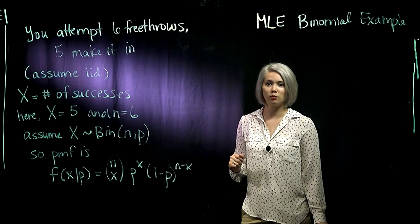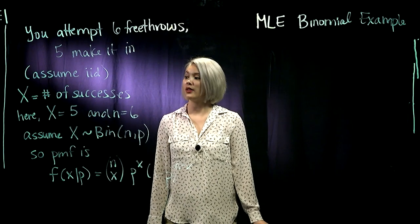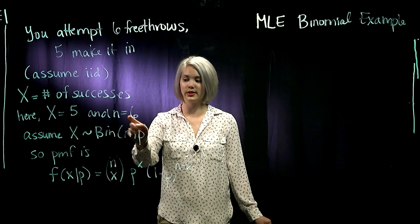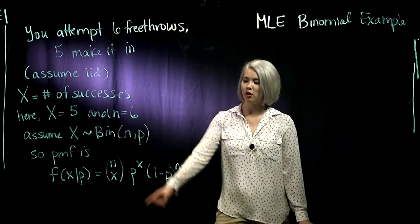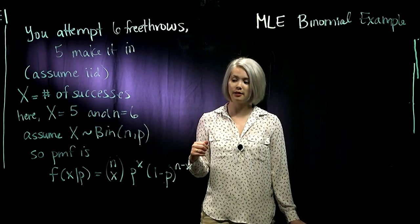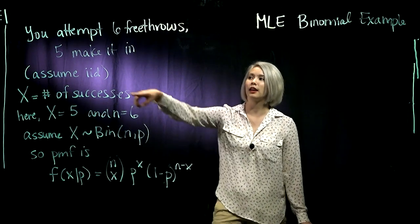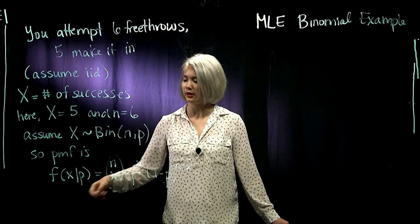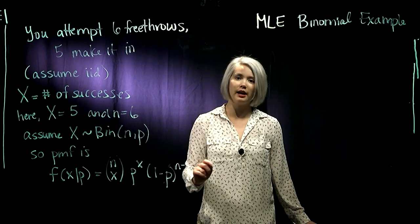So if we define a random variable X as the number of successes, the number of shots that make it in, then in our case we have X equals five and we have six attempts, so n equals six. In other words, our random variable X has this binomial distribution with n equals six and p unknown, so p is the probability of the shot making it in the basket. P is unknown, this is what we're looking for based on the fact that you have six shots, five of them made it in. Our PMF then, we know from probability, is n choose x times p to the x times 1 minus p to the n minus x.